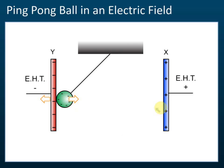Same charges repel, so it will push the ball back to the right. When the ball reaches the positive plate, the negative charge goes into the plate again, making it positive, and pushing the ball back. So this ping pong ball will oscillate between the two plates — right, left, right, left — picking up and disposing charge at each plate.